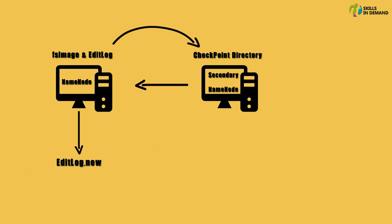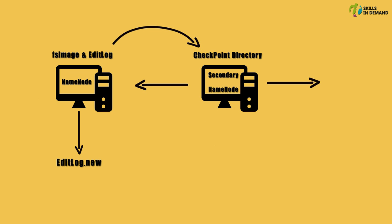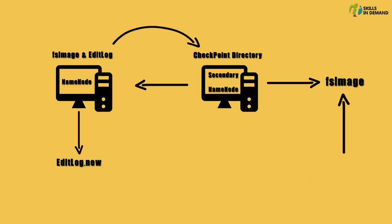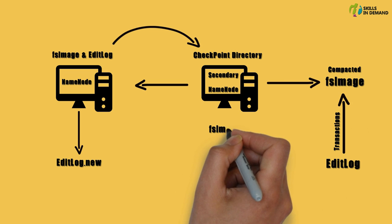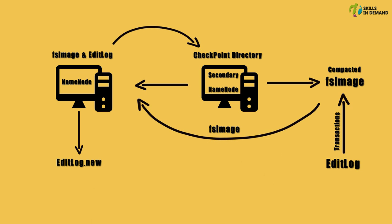Once these files are copied, the secondary name node loads the FS image and applies all the transactions from the edit log file, and stores this information onto a new and compacted FS image file. The secondary name node transfers this compacted FS image file to the name node. The name node adopts this new FS image file and also renames the new edit log file back to the edit log file.